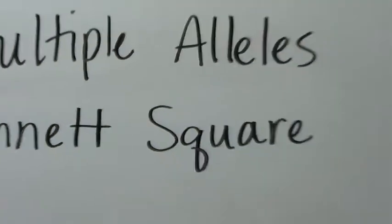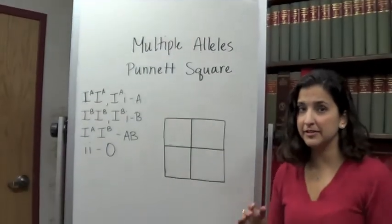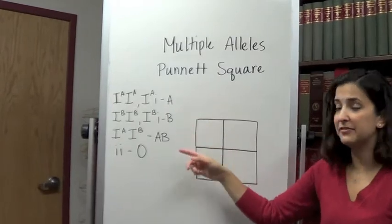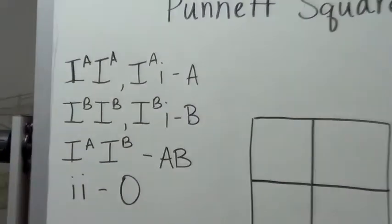Today we're going to be talking about multiple alleles Punnett squares. Multiple alleles Punnett squares are a little more complicated because you have a number of different options as to what you can get for a phenotype.